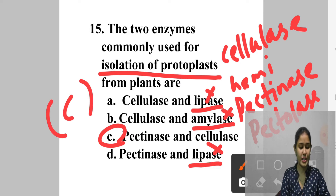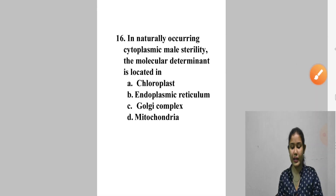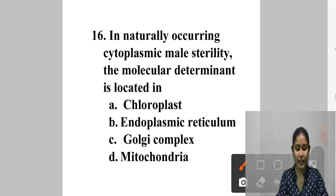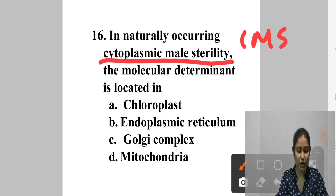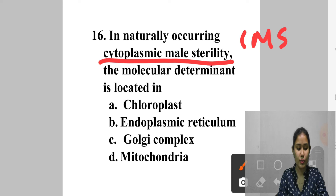Question 16: In naturally occurring cytoplasmic male sterility (CMS), the molecular determinant is located in — A. Chloroplast, B. Endoplasmic reticulum, C. Golgi complex, D. Mitochondria. CMS is a condition where a plant is unable to produce functional pollen. It is a maternally inherited trait often associated with unusual open reading frames found in mitochondrial genomes. Answer is option D — mitochondria.